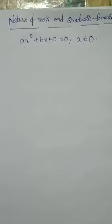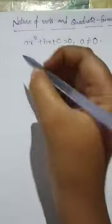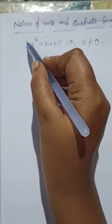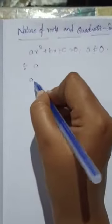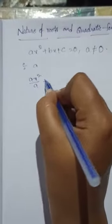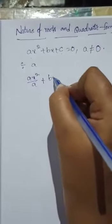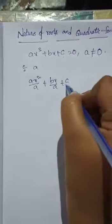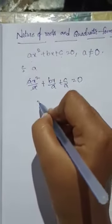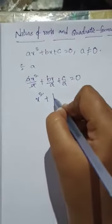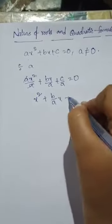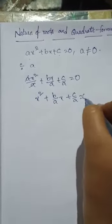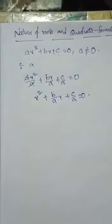A should not be equal to 0. Here, the x² coefficient is A. Divide the entire equation by A: Ax²/A + Bx/A + C/A = 0. A and A get cancelled, which gives x² + (B/A)x + C/A = 0.